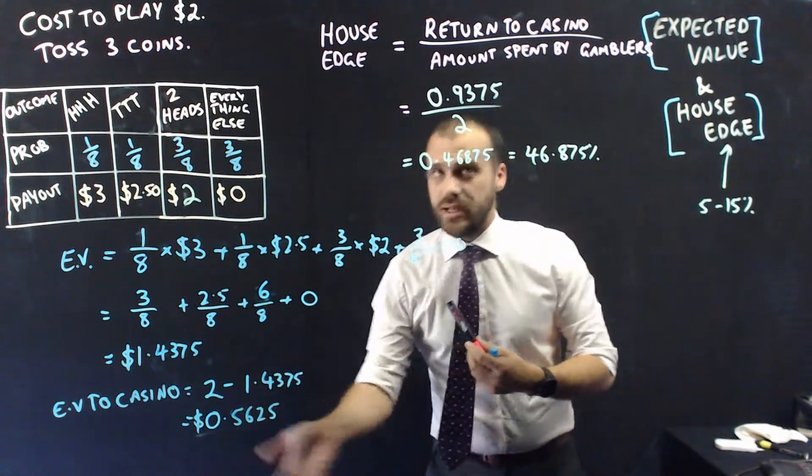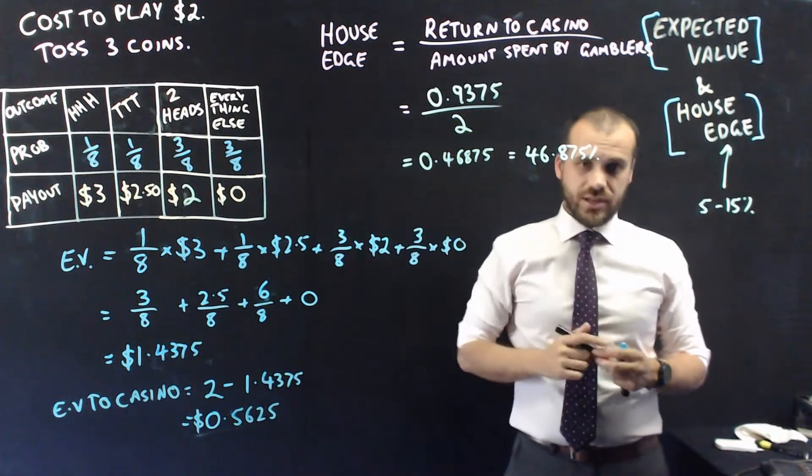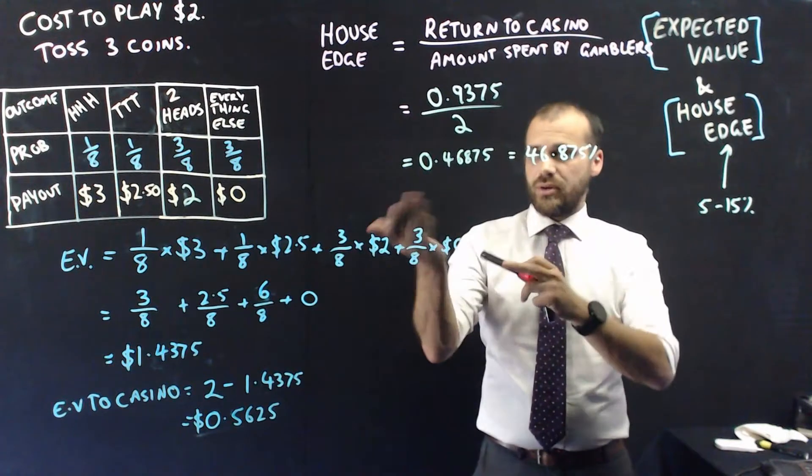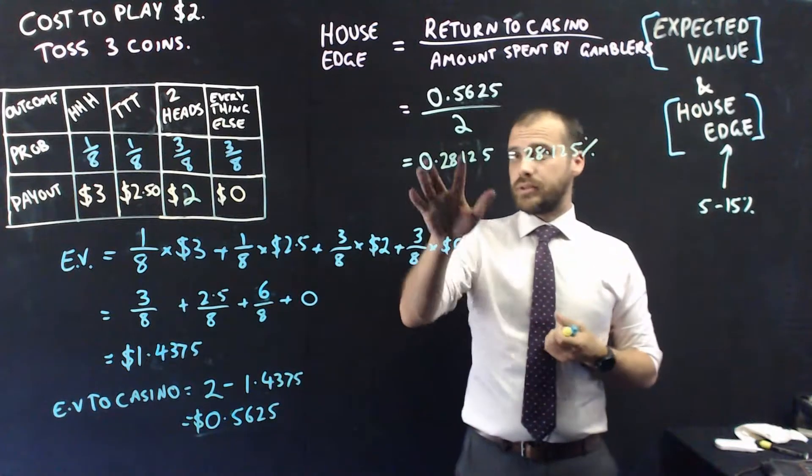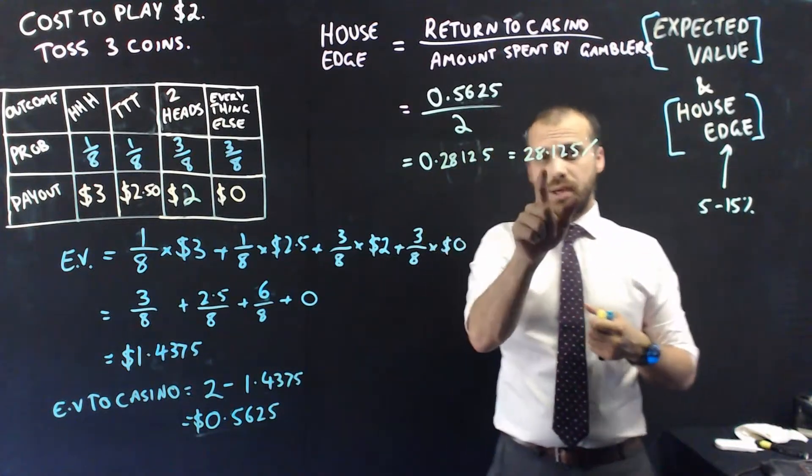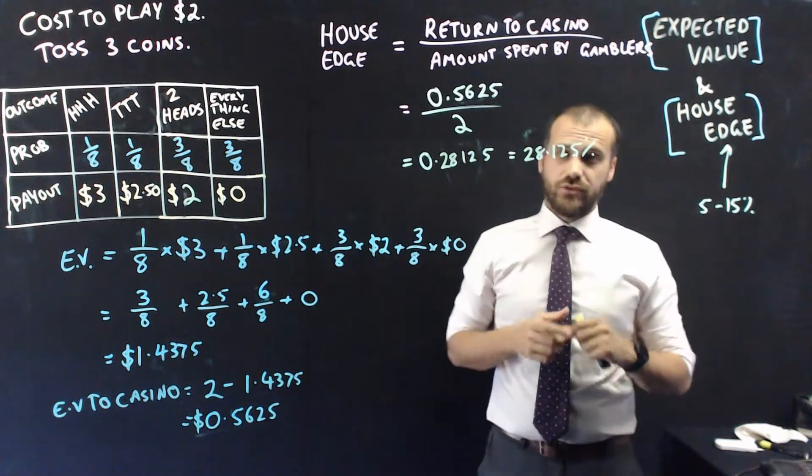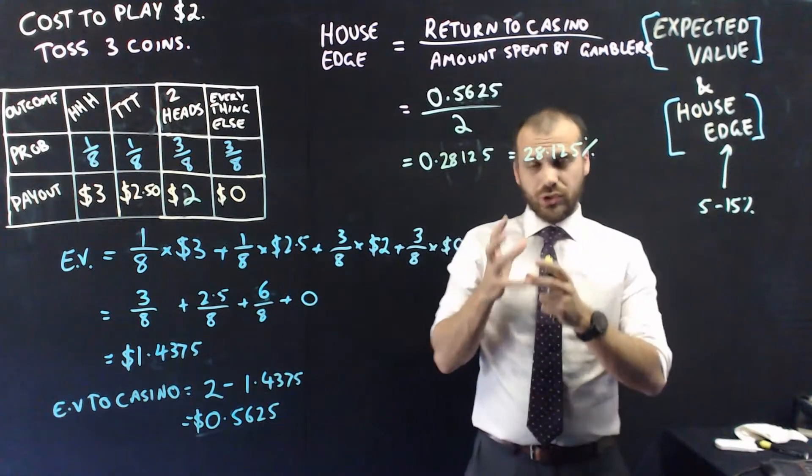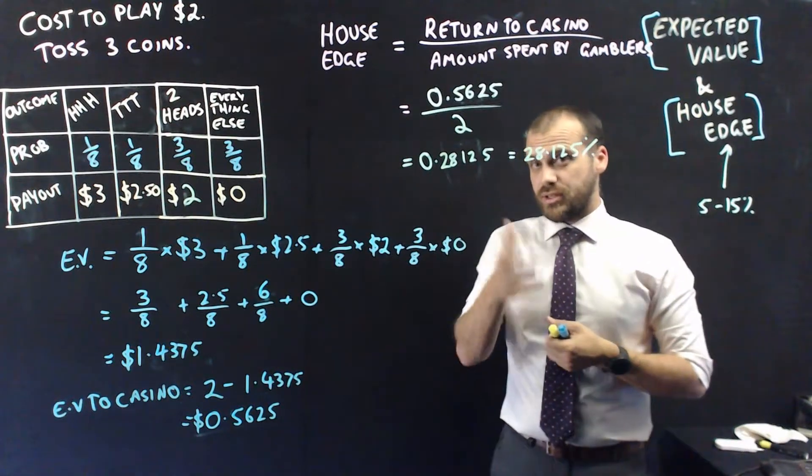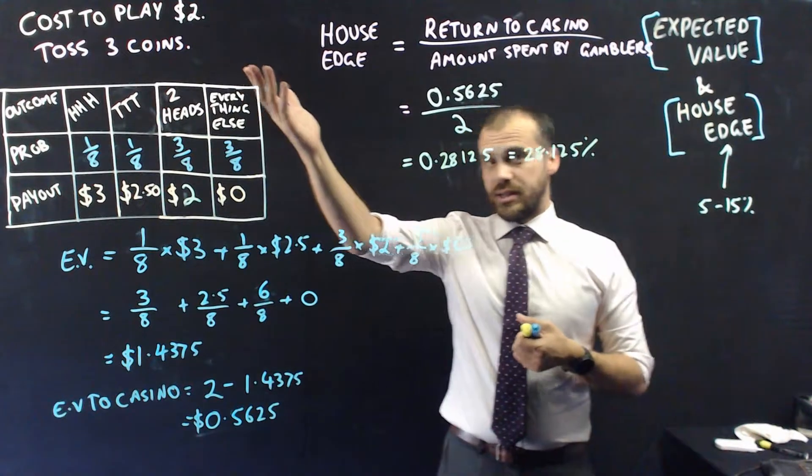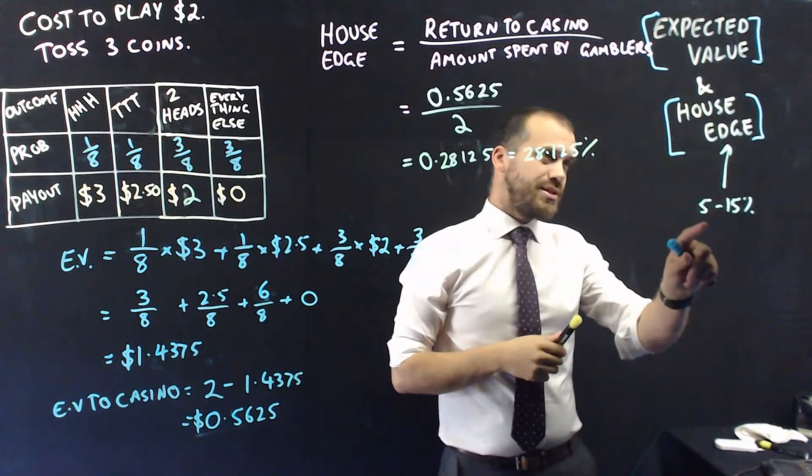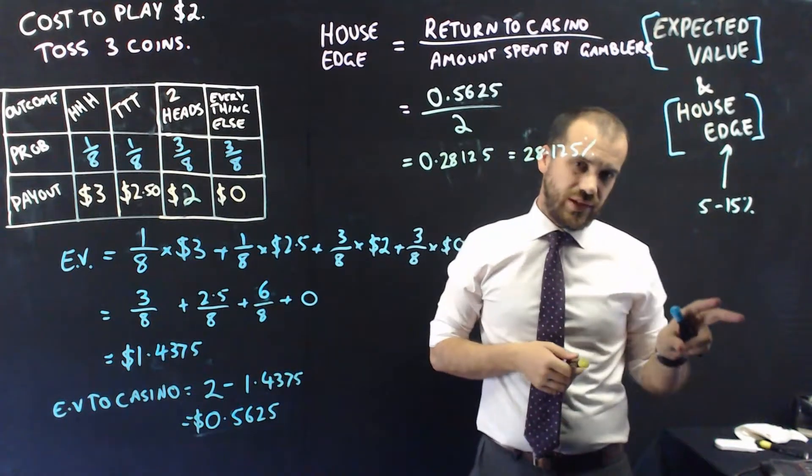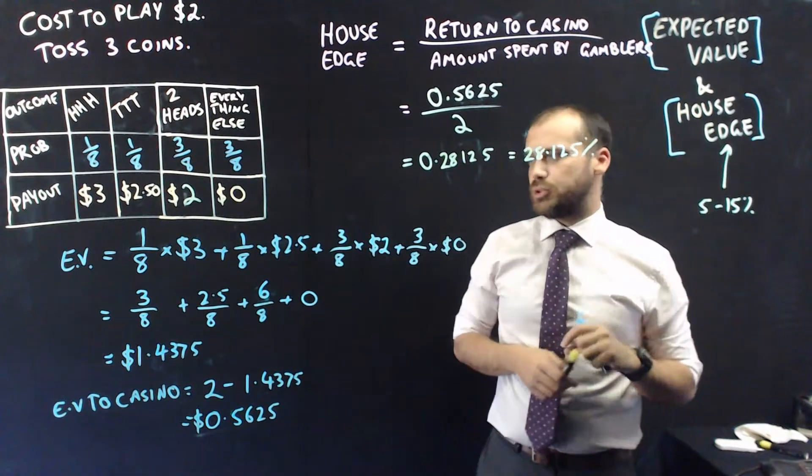Now, I'm going to take that number and put it into our house edge formula and find out what our house edge is now. This looks a little bit better. I get a new house edge of 28.125%. That's still a big return to the casino. That means that every time someone plays, they lose 28.125% of their money. It's still not in this 5% to 15%, so maybe I need to make one more change.